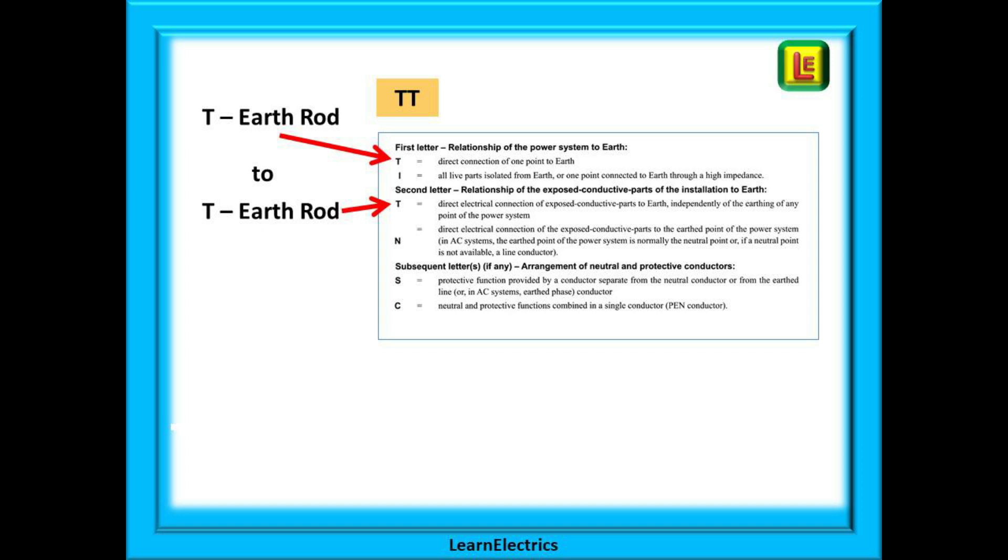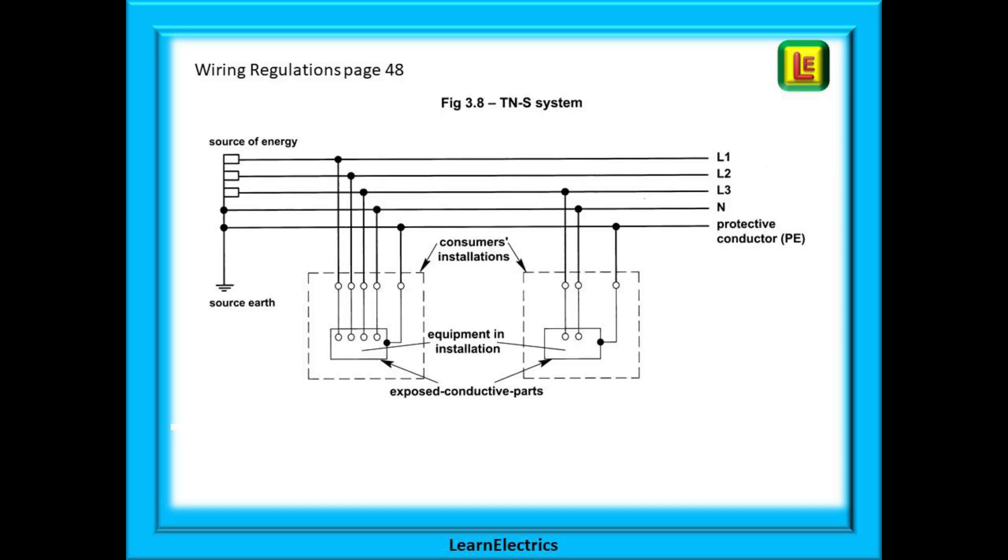So we have earth rod to earth rod or TT. Chapter 31 continues with several schematics of earthing system types. The first one is a TNS system shown on page 48. And understanding just what they are showing you really helps.